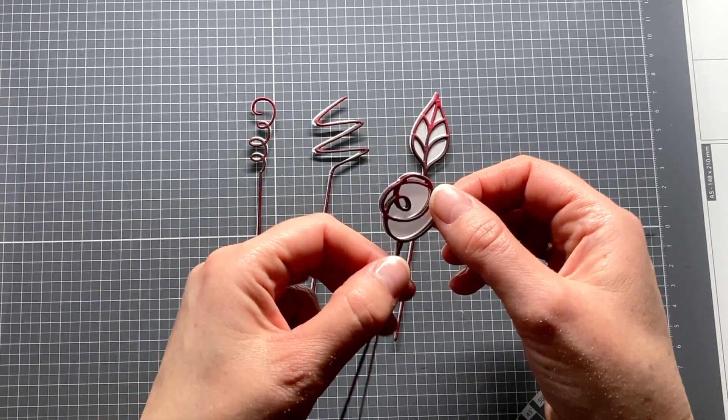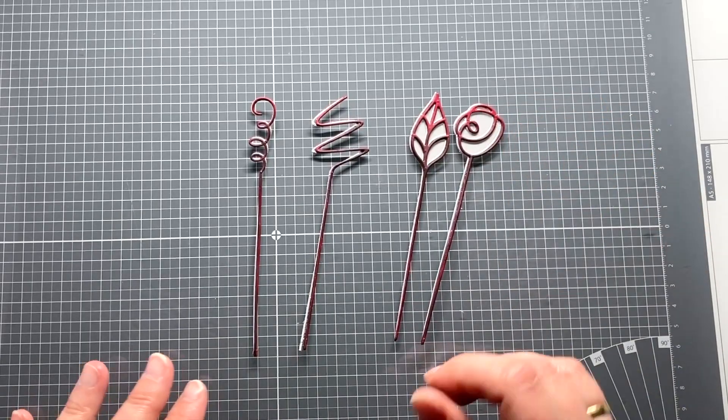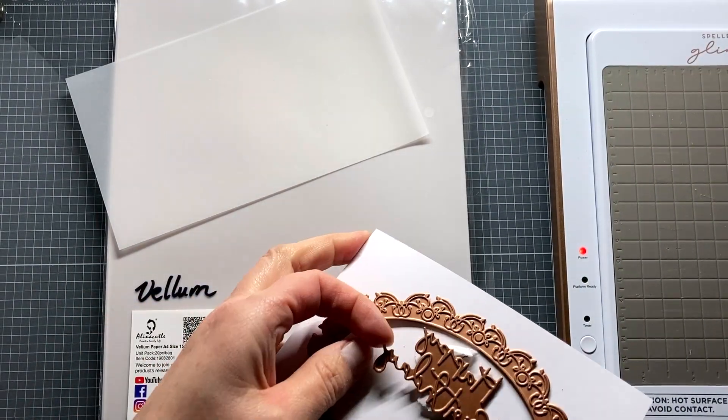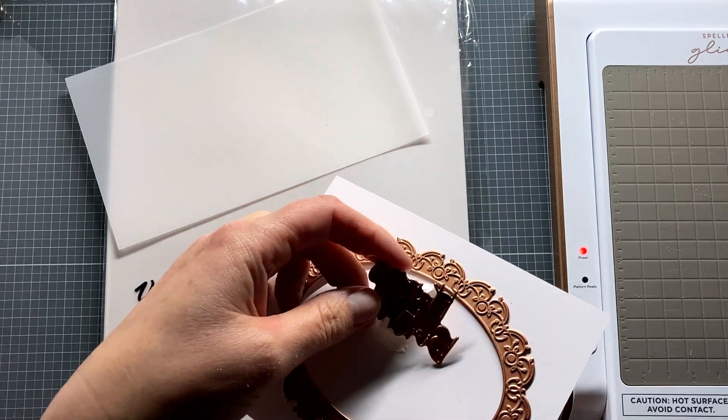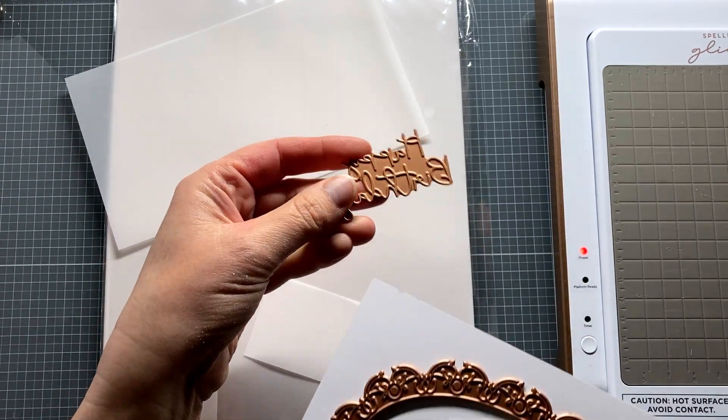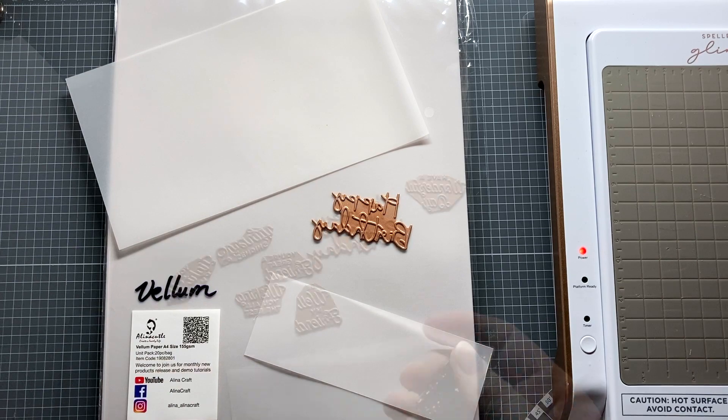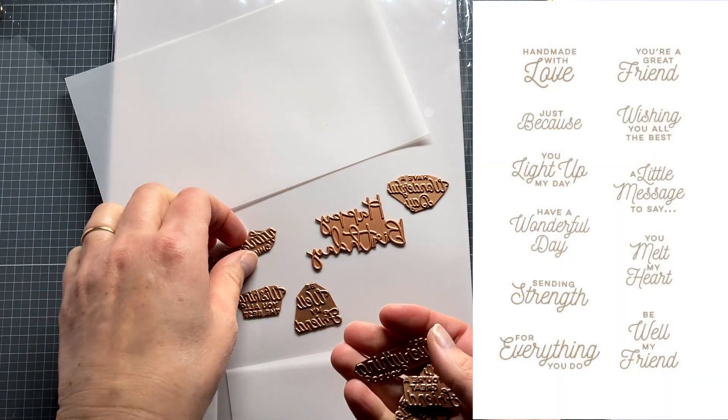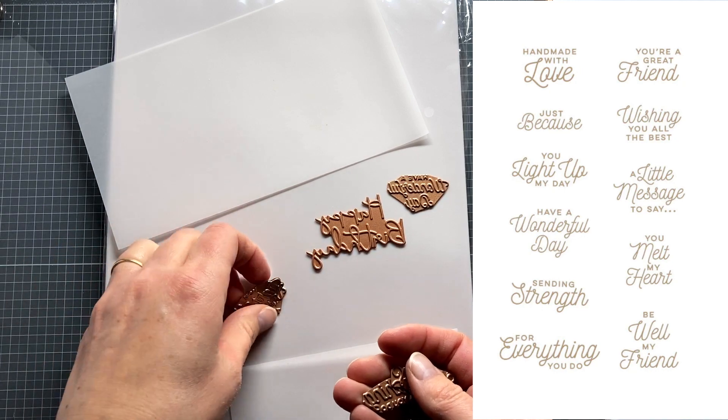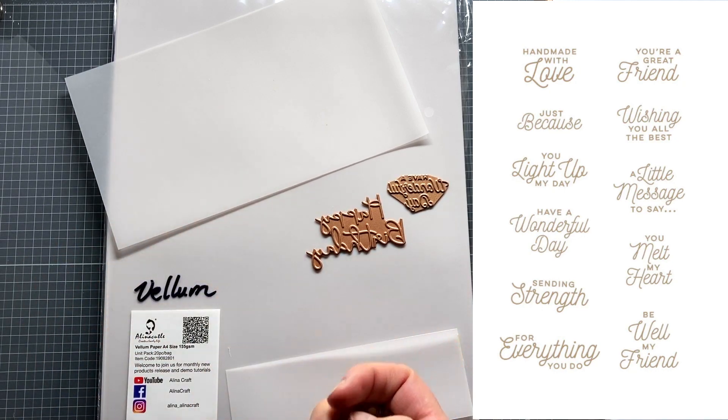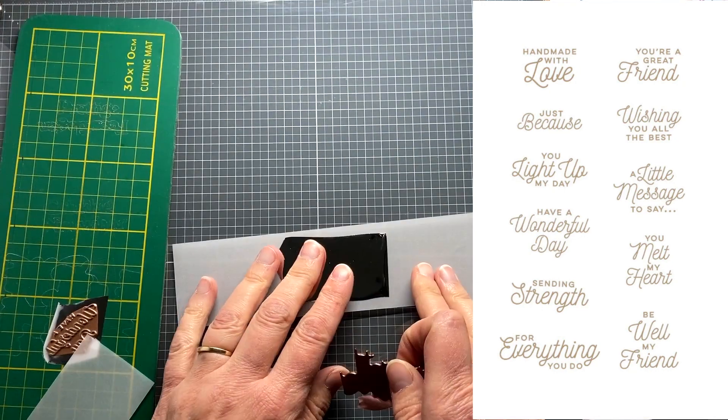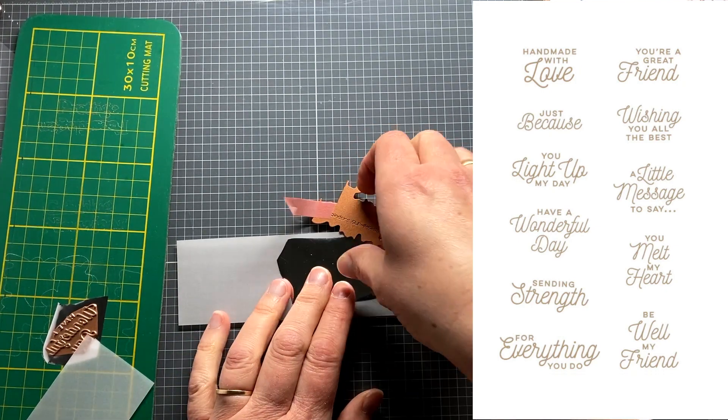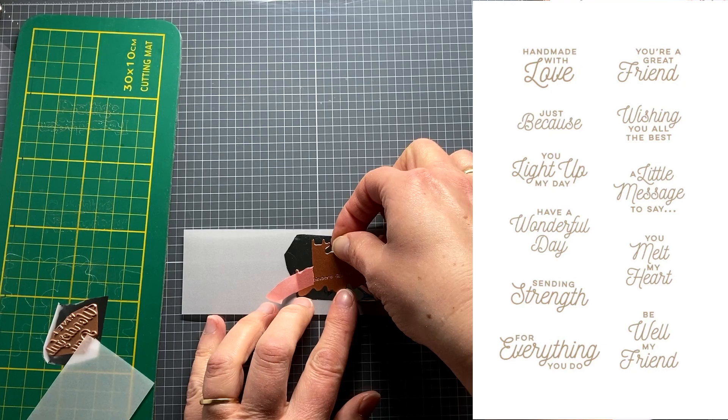I am now going to foil the text for the card on vellum first. I am using the vellum from Alina Craft. The glimmer text plate I will be using is the Spellbinders Happy Birthday glimmer plate, that comes with the hot foil machine. On another piece of vellum, I foil one of the text that come with the Sealed by Spellbinders collection. Links for all the products I will put for you in the description below the video. I choose the sentiment, have a wonderful day!